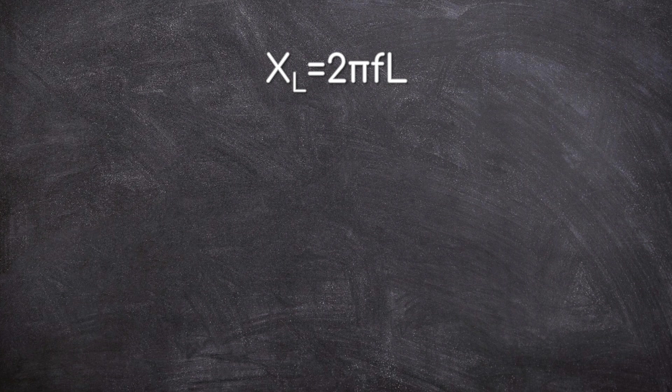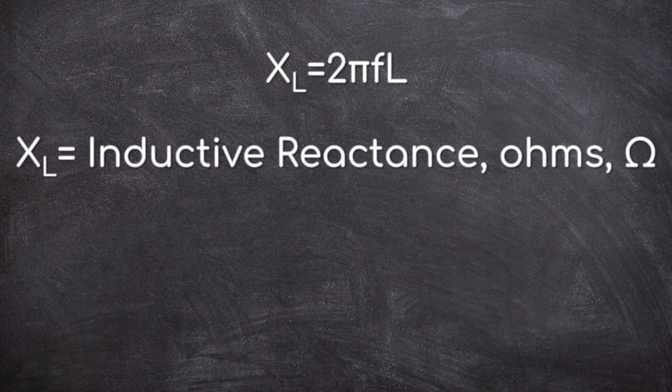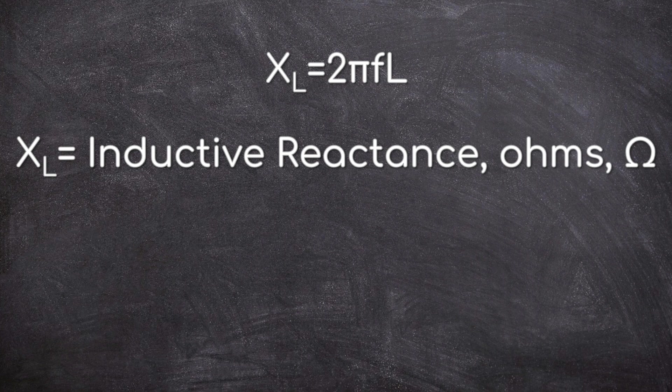First things first, the symbol at the start XL - you'll notice it's a capital X and a capital L but the L is in the subscript. XL represents inductive reactance: the X is reactance, the L indicates that it is inductive reactance.